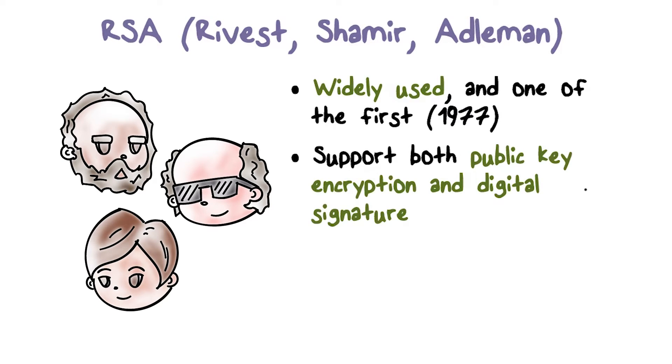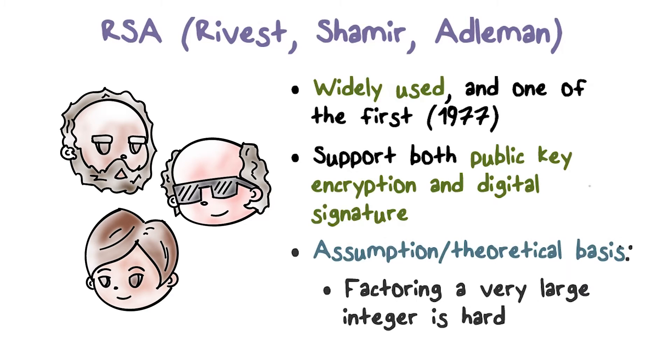RSA supports both public key encryption and digital signature. The security strength of RSA is based on the hypothesis that factoring a very large number into two primes is a very hard problem. That is, given a large number, it is computationally very hard to factor it into two primes.